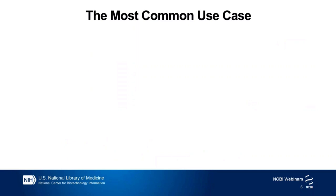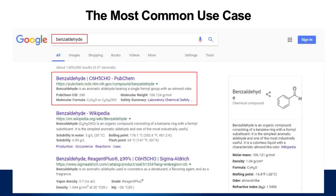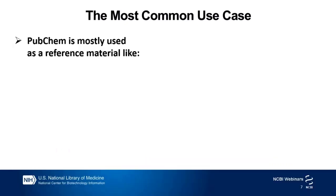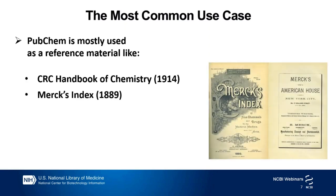The most common use case of PubChem is search through Google. People go to Google to search for a chemical by name, and usually it gives a PubChem record near the top of the search result. Then people click it to go to PubChem and get the information they need. Basically, students are using PubChem as a reference material like the CRC Handbook or Merck's Index.